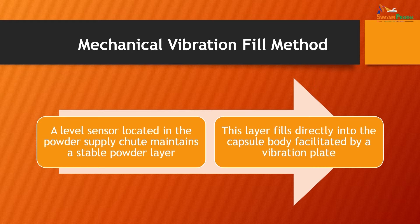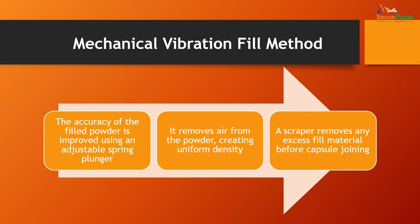In the mechanical vibration fill method, a level sensor located in the powder supply tube maintains a stable powder layer, which then falls directly into the capsule body facilitated by a vibration plate. The accuracy of the filled powder is improved by an adjustable spring plunger that removes air from the powder, creating uniform density. A scraper then removes any excess fill material before capsule joining.